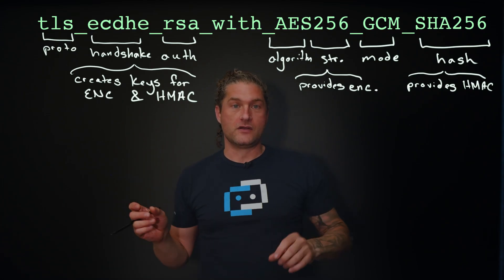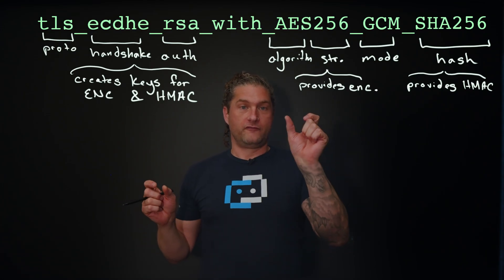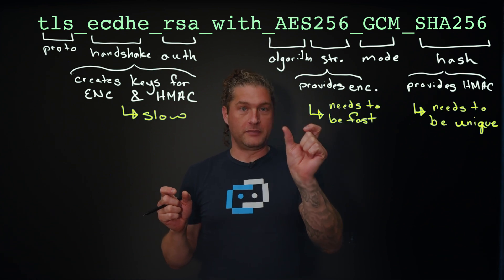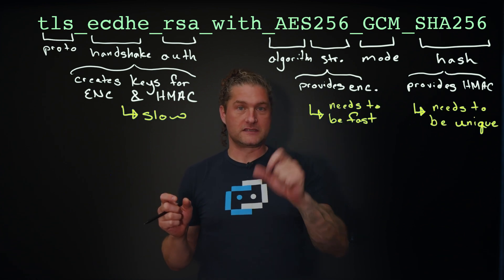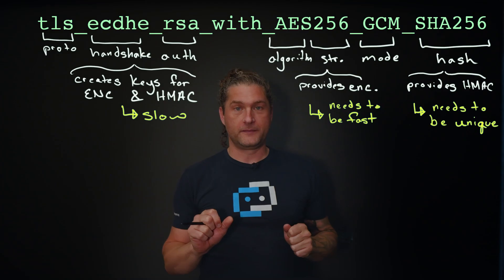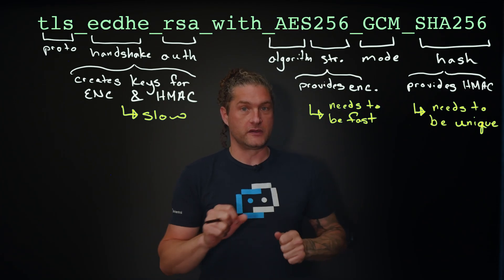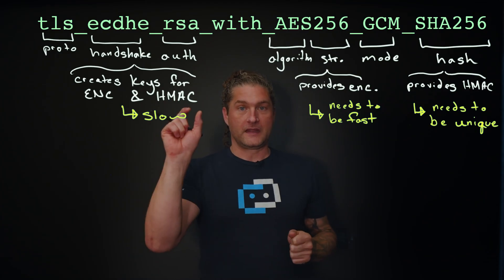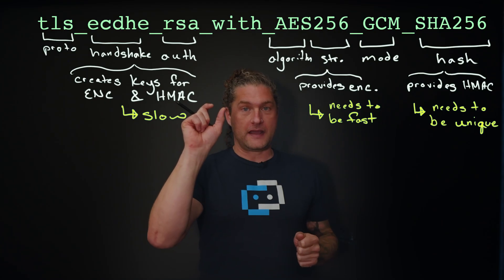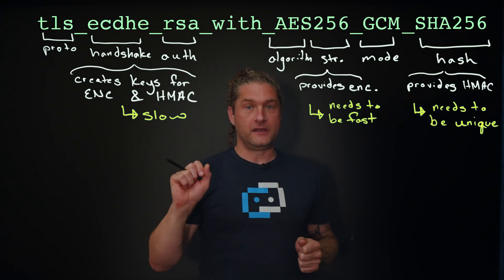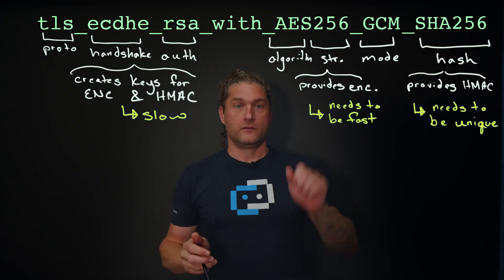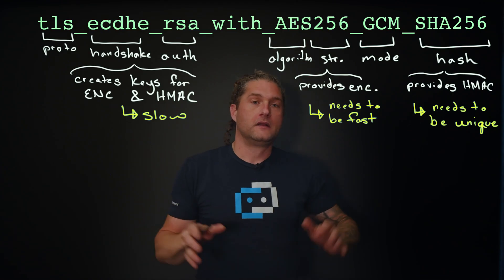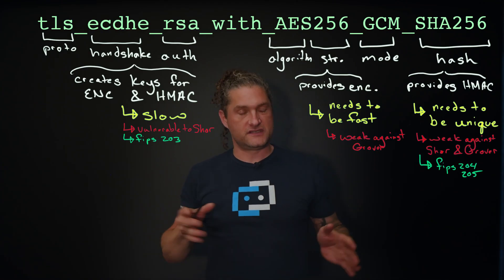We have our authentication, our encryption, and then our HMAC — the hash-based message authentication. The first part is intrinsically slow; that is the really complicated mathematics. The second part, the encryption, needs to be very fast because it does the bulk of the transport. The hash needs to be unique.